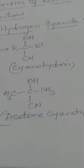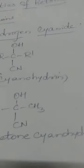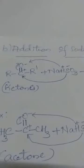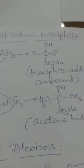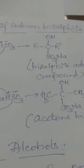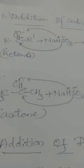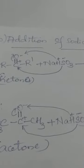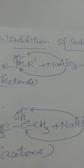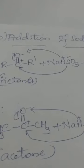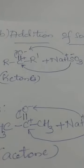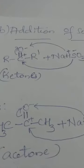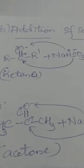The next addition reaction, similar to that of aldehydes, is addition of sodium hydrogen sulfite — also called sodium bisulfite. You must take a saturated solution of sodium bisulfite. NaHSO3 splits as H+ and −SO3Na. Ketones react with a saturated solution of sodium bisulfite to form a white crystalline precipitate of bisulfite addition compounds.